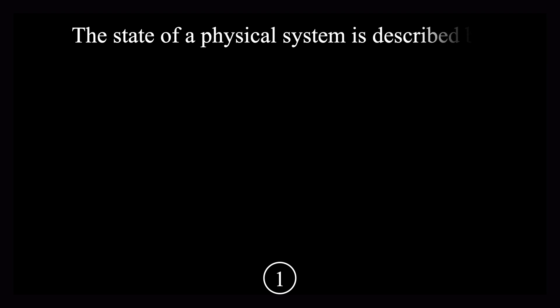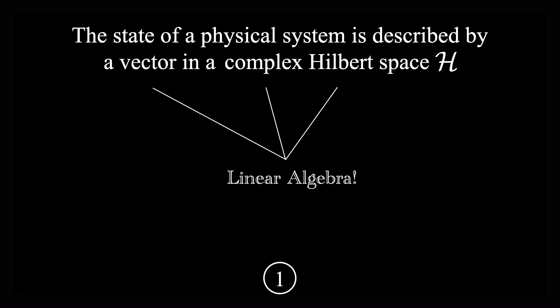Okay, so let's get to those axioms. The first axiom says the state of a physical system is described by a vector in a complex Hilbert space, which we label as H. There are three key linear algebra concepts here.